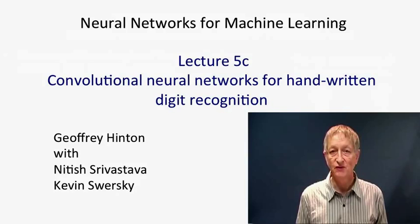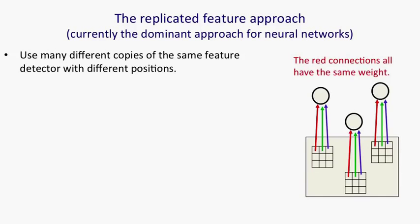Convolutional neural networks are based on the idea of replicated features. Because objects move around and show up on different pixels, if we have a feature detector that's useful in one place in the image, it's likely that the same feature detector will be useful somewhere else. So the idea is to build many different copies of the same feature detector in all the different positions. If you look on the right, I've shown you three feature detectors which are replicas of each other. Each of them has weights to nine pixels and those weights are identical between the three different feature detectors.